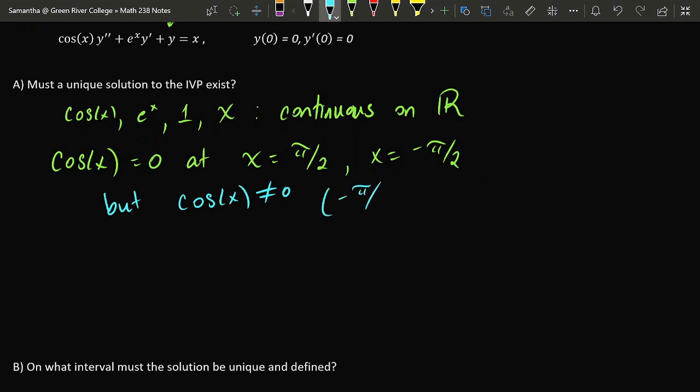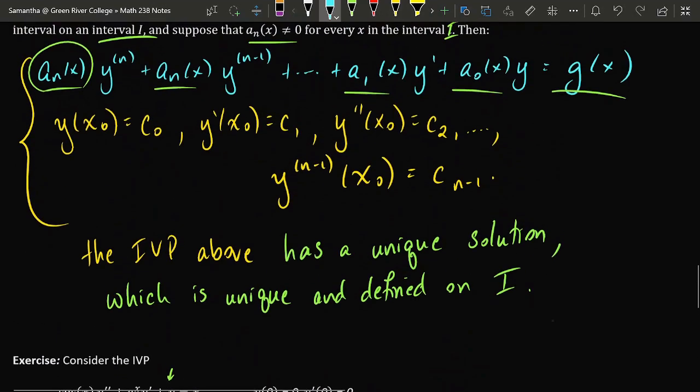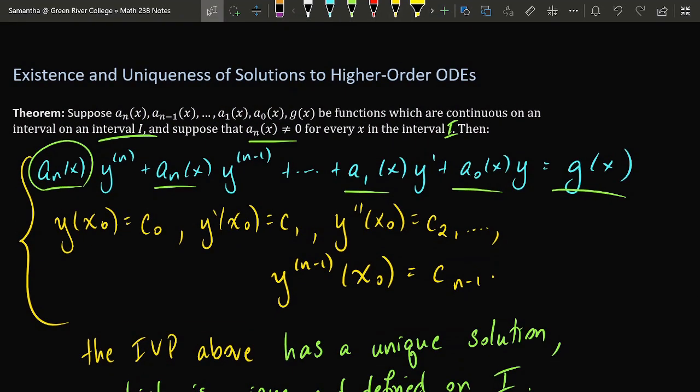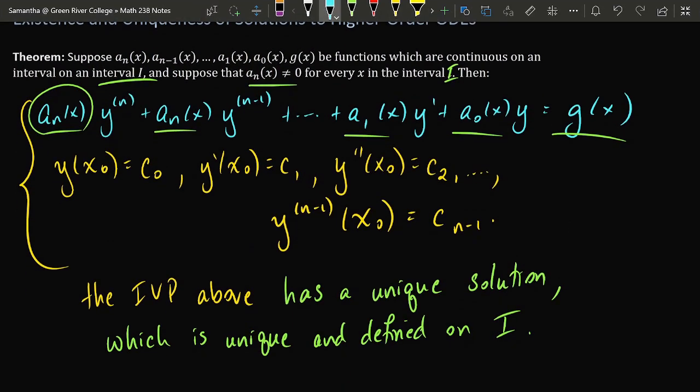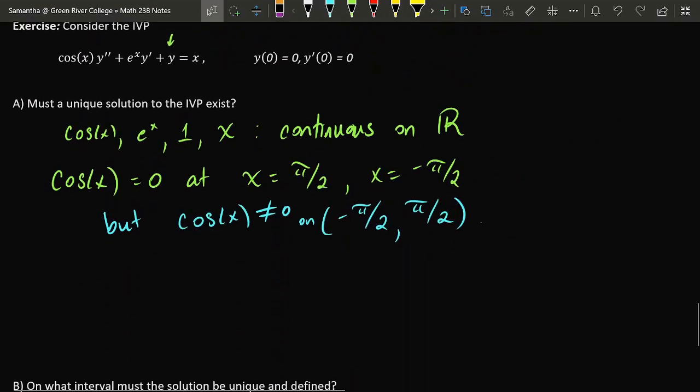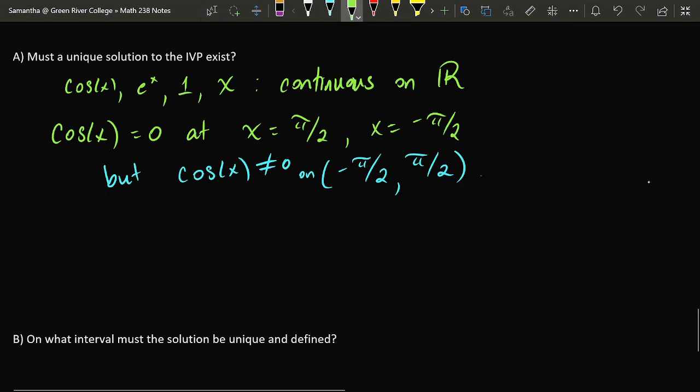But in between those values, cos(x) is non-zero. So from -π/2 to π/2, not including the endpoints, cos(x) is non-zero on that location. So on the interval from -π/2 to π/2, the differential equation satisfies all the conditions that were outlined in the previous theorem. On that interval, all these functions of x are continuous, and on that interval, the first function of x does not produce any zero values.